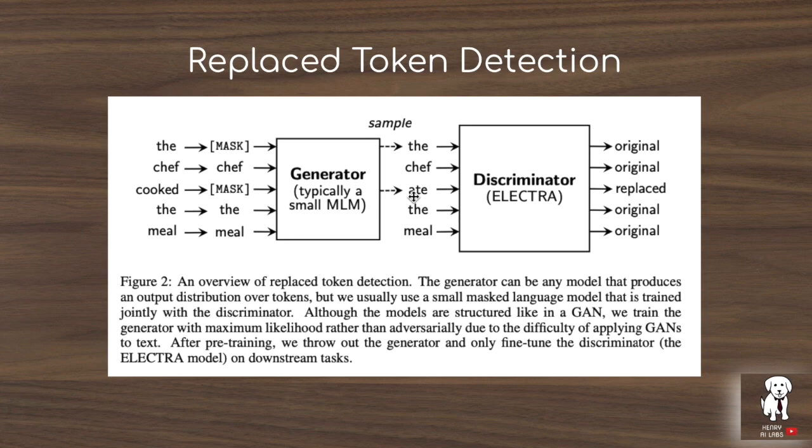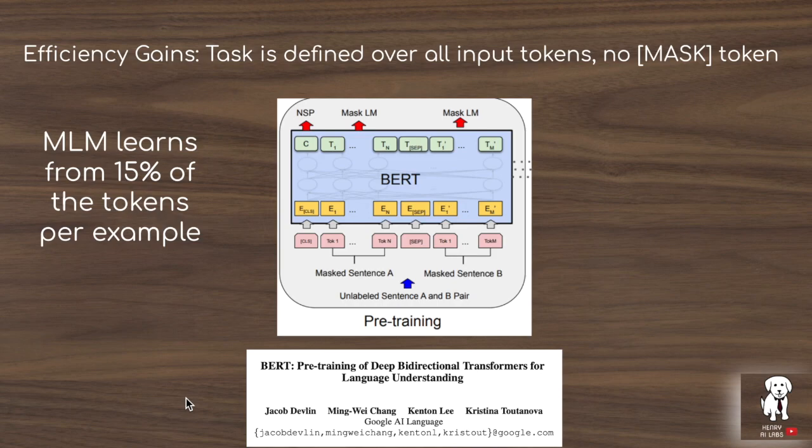Two reasons behind the efficiency gains in replace token detection compared to masked language modeling in BERT: first, the task is defined over all input tokens. In the BERT objective, you have attention over the entire sequence but only predict the masked tokens in the output layer — so if token T_1 hasn't been masked out, its final output embedding doesn't contribute at all to the loss function.